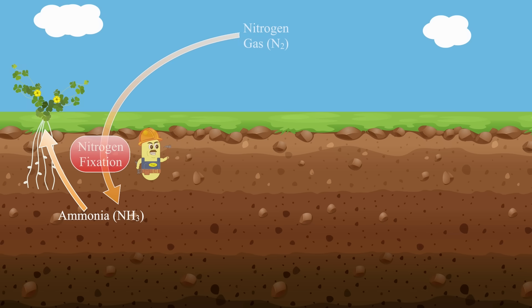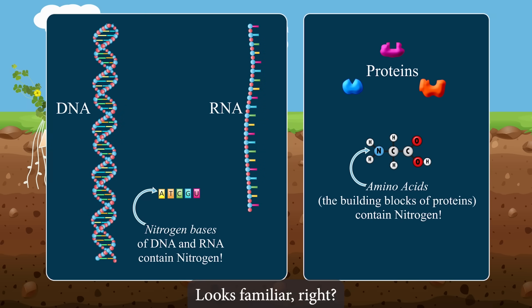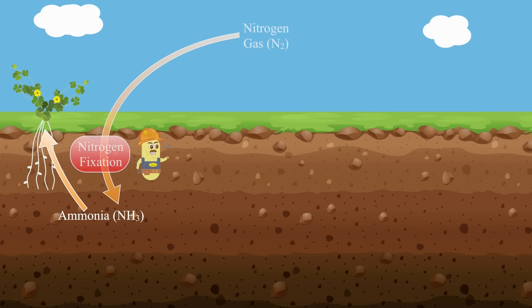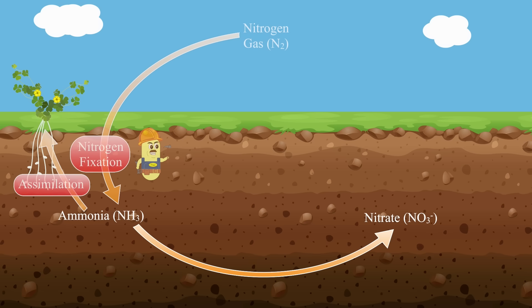Ammonia can be taken up by plants and used to make important biological molecules like DNA and proteins. This process of uptake and production of biological molecules is called assimilation. But not all of the ammonia produced by nitrogen fixation gets assimilated into plants. Too much ammonia can be toxic, and sometimes plants prefer to assimilate other nitrogen compounds called nitrates. Our next step is the conversion of ammonia into nitrates, a process called nitrification.